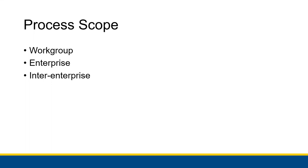We did talk about some dynamic processes when discussing collaboration specifically — collaboration is a dynamic process in its own sense, designed to help us solve problems and make decisions. Next chapter we'll be talking about another type of dynamic process involving social media. But we're focusing on structured processes for this chapter. A process will have three different types of scopes: a workgroup scope, an enterprise scope, and an inter-enterprise scope.